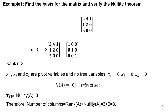We will try to understand the Nullity theorem with an example. Let us consider a matrix defined as: first row [2, 4, 1], second row [1, 2, 0], third row [5, 0, 0]. We reduce this matrix into echelon form by the row reduction method. Here, the number of rows m = 3 and the number of columns n = 3.